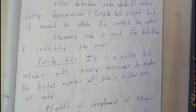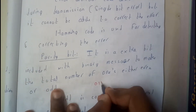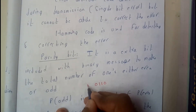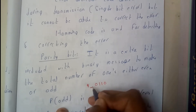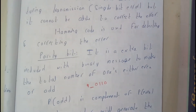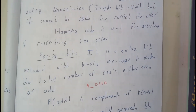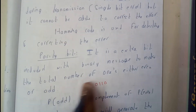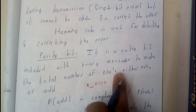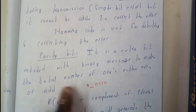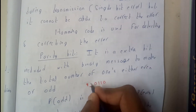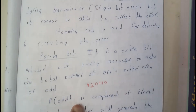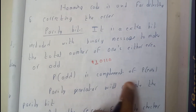Parity bit is an extra bit included with the binary message. We will be adding an extra bit to make it belong to either even or odd parity. It is an extra bit included with the binary message to make the total number of ones either even or odd.